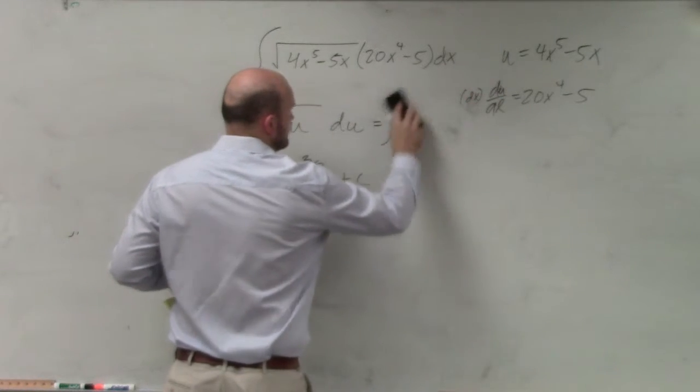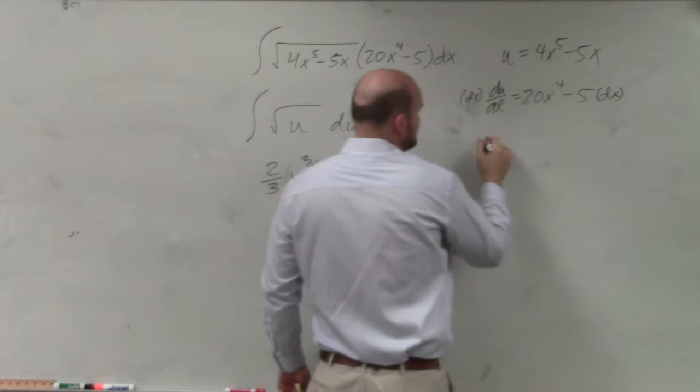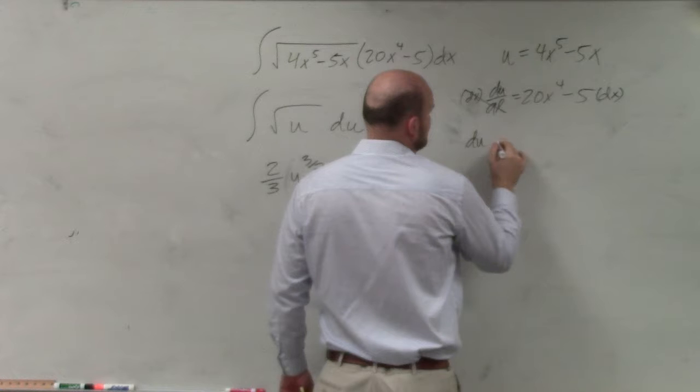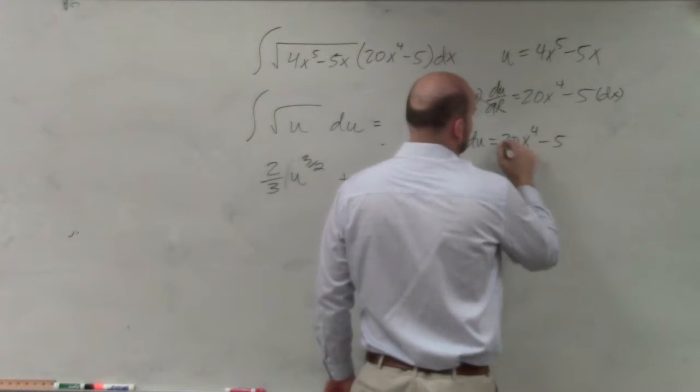What about the average? He said 2 thirds times the 3 halves. It should have been u to the 3 halves times 2 thirds. But you can't read it off like that, though.